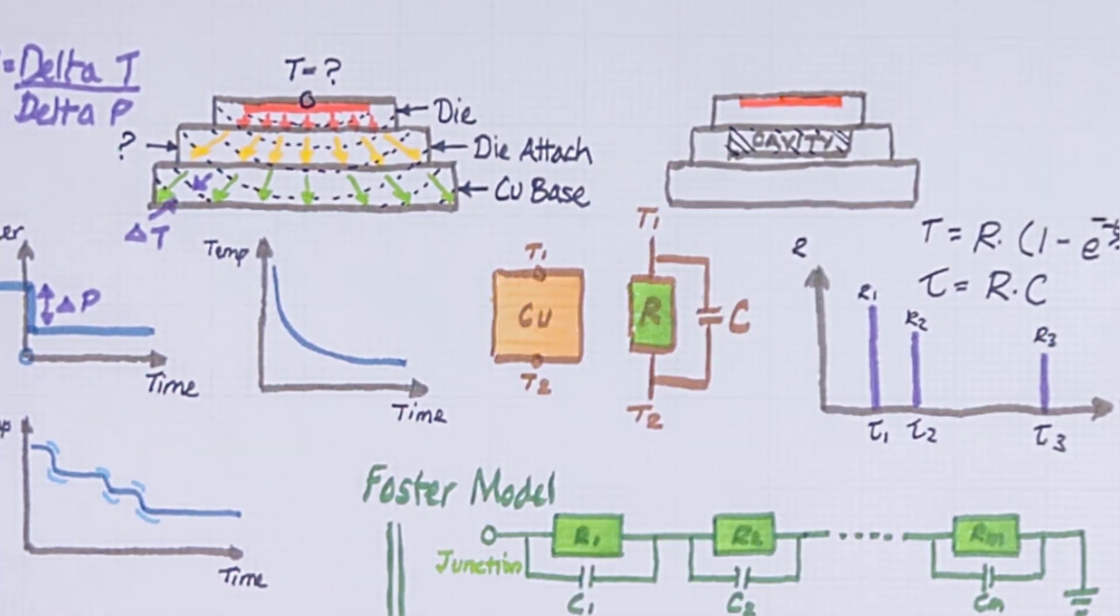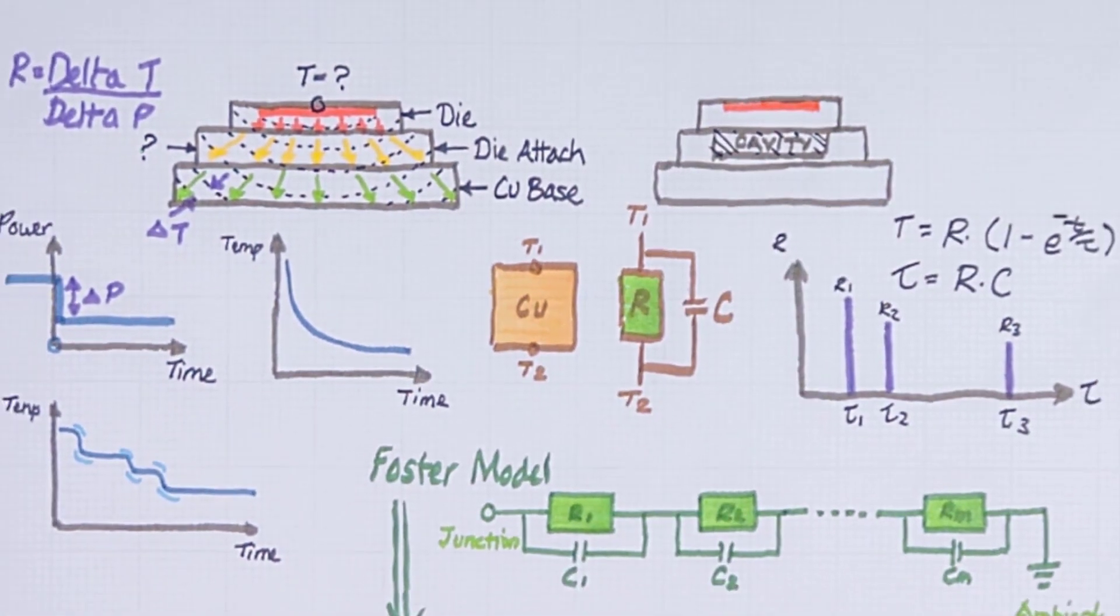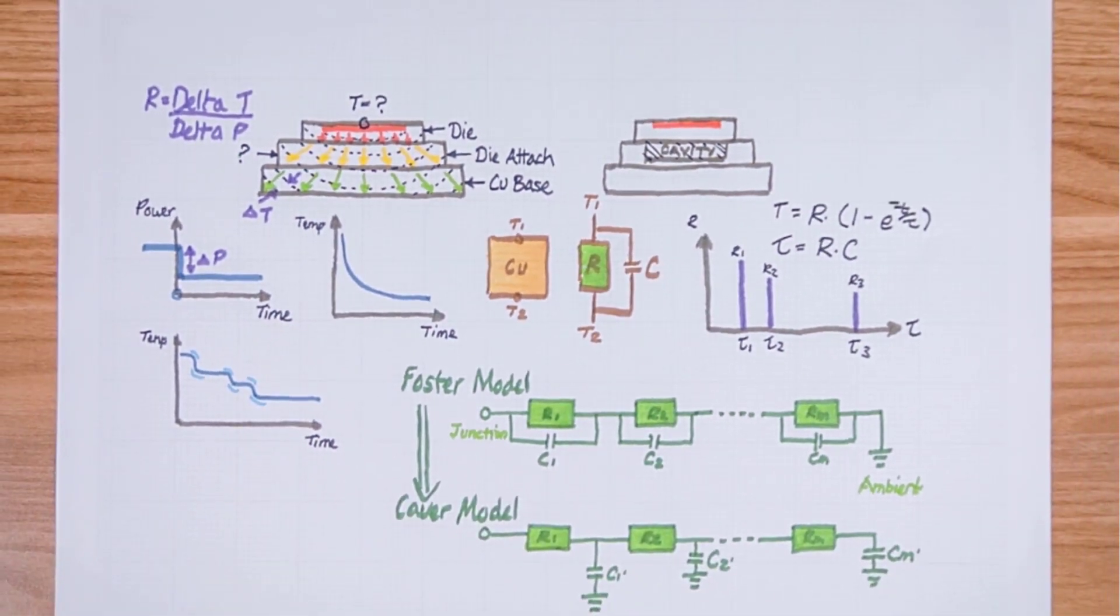This is just a network model. How do we get a full structure function out of it? Along this axis is the sum of the capacitances of the ladder model and along the bottom is the sum of the resistances.